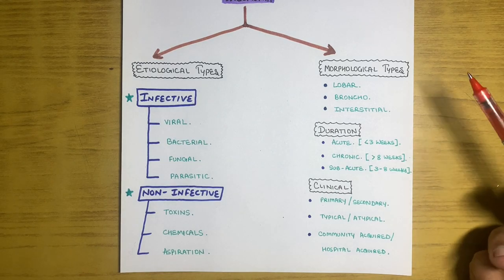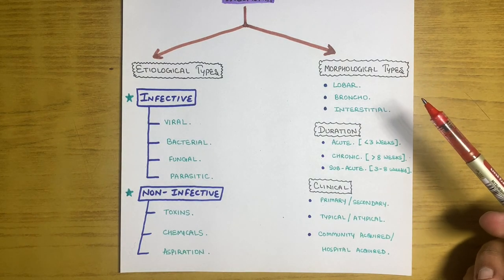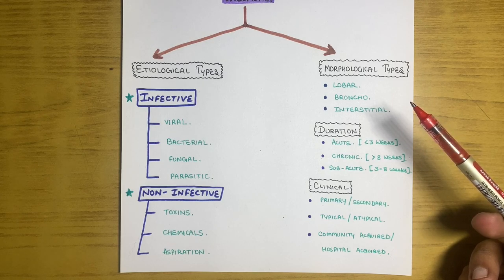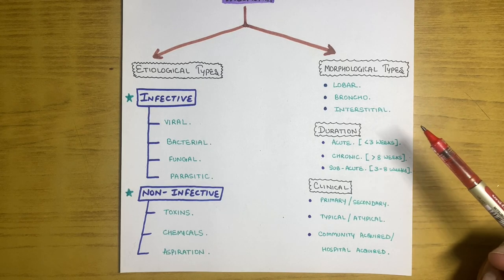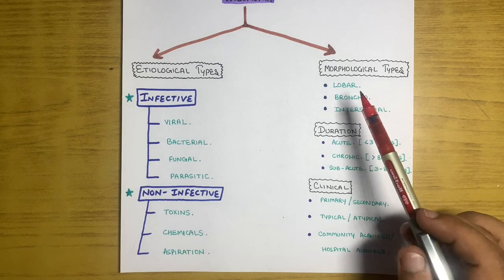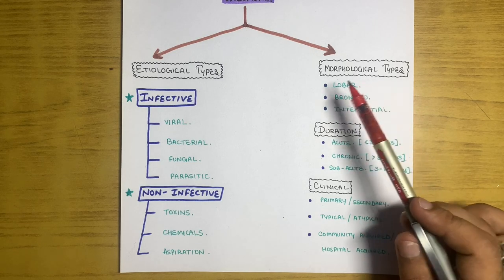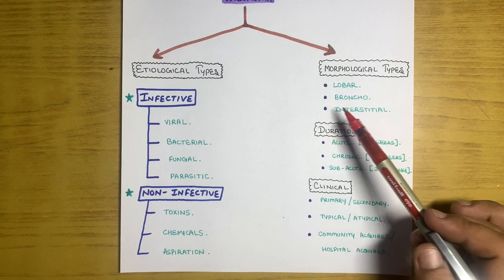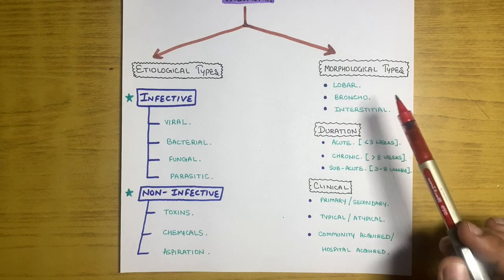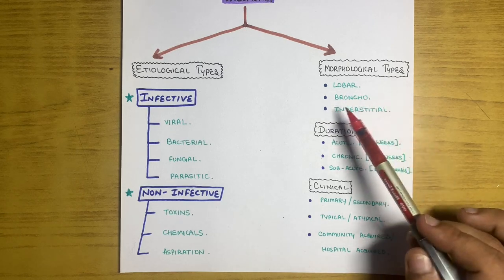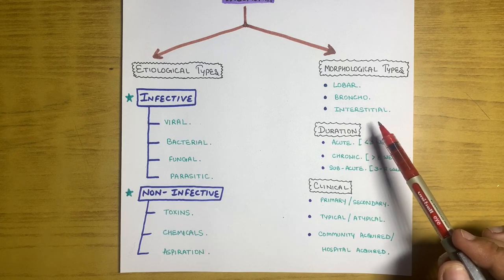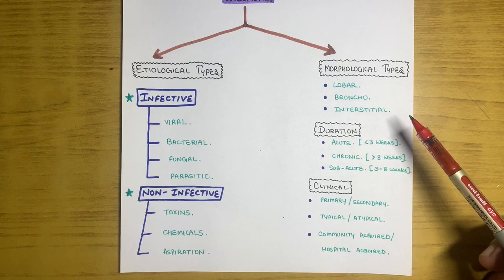Now the morphological type. Morphology refers to the part of the lung affected by pneumonia. If the lobe is involved, it is known as lobar pneumonia. If the bronchus area is mainly involved, then it is bronchopneumonia. And if the interstitial lining is involved, then it is interstitial pneumonia.